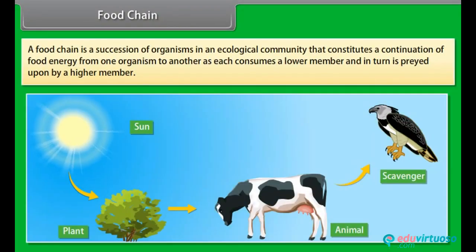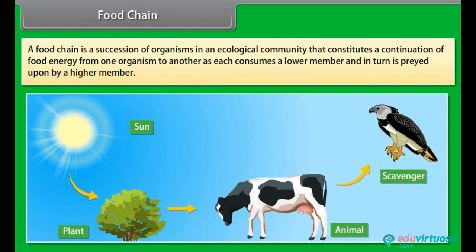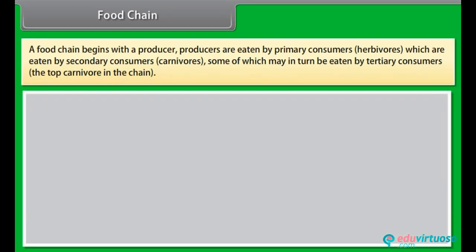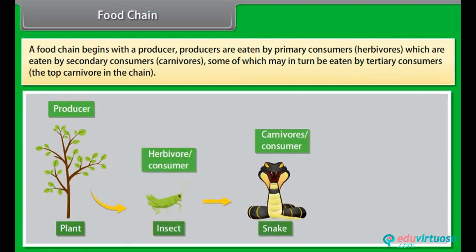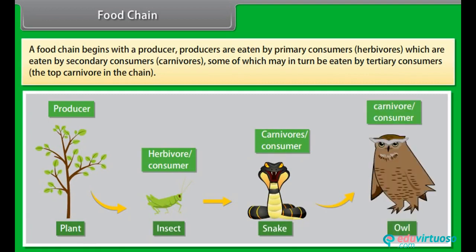A food chain is a succession of organisms in an ecological community that constitutes a continuation of food energy from one organism to another, as each consumes a lower member and in turn is preyed upon by a higher member. A food chain begins with a producer. Producers are eaten by primary consumers — herbivores — which are eaten by secondary consumers — carnivores — some of which may in turn be eaten by tertiary consumers, the top carnivore in the chain.